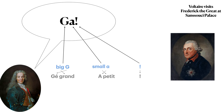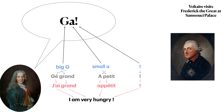So Frederick, getting this message, would have sounded this out and gotten 'je grand à petite'. He would have recognized that 'je grand', the big G, sounds like the two-word French phrase 'je grand', and 'à petite' sounds like the French word 'appétit'. Which means: I am very hungry — 'J'ai grand appétit'. So at this point, Frederick would have successfully invited Voltaire to dinner, and Voltaire responds accepting the invitation.